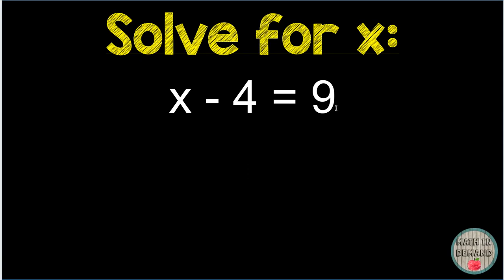x minus 4 equals 9. Just like you saw, I am going to do the opposite of subtracting 4, which is adding 4. Whatever I do to one side, I will do to the other side. Negative 4 and positive 4 cancel because they equal 0.